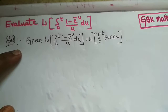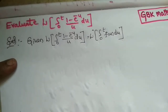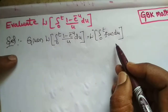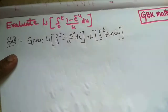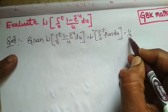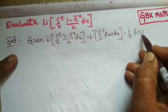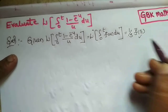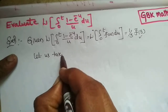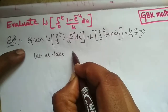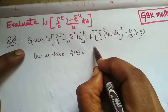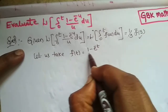Under the Laplace transformation of integral property, we apply this form. Before that, we need to find f̄(s). The answer by this property is 1/s times f̄(s). To find f̄(s), let f(t) = (1 - e^(-t))/t.